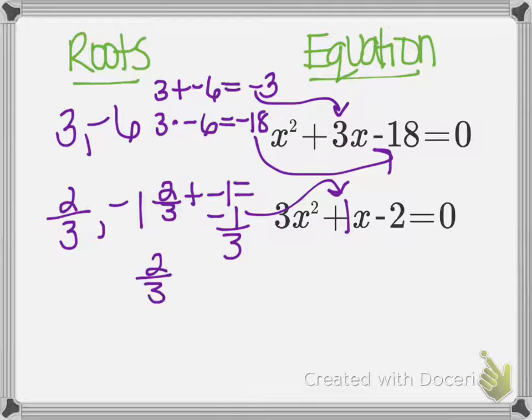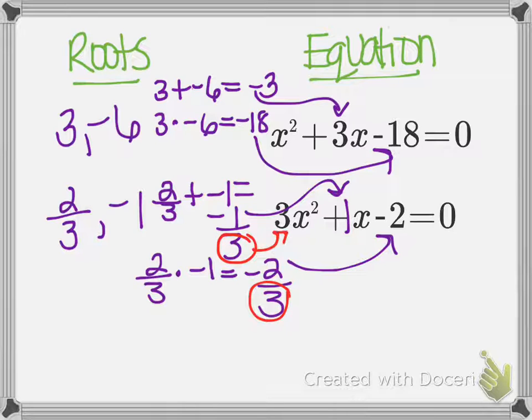When I multiply 2 thirds and negative 1, I get negative 2 thirds. And there's that negative 2. It seems like now that I have fractions involved, this bottom number is correlating with my a value or my lead coefficient. That wasn't really an issue back here because my a value was just 1.